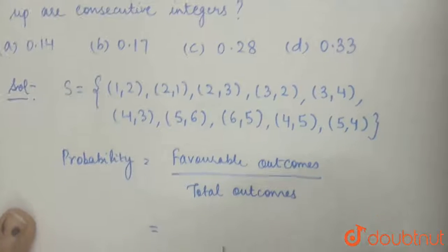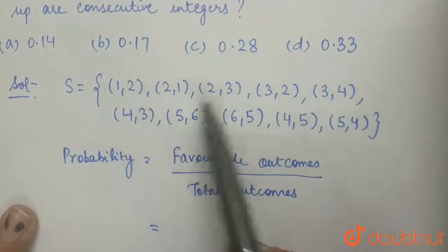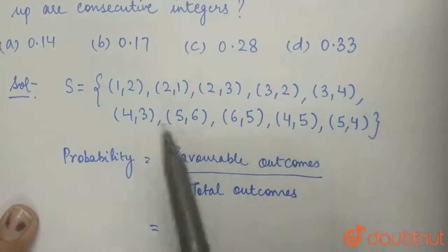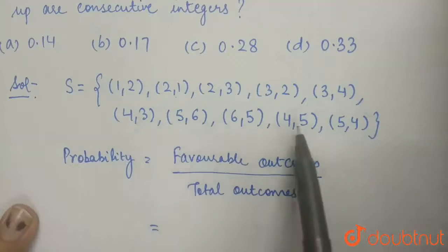So favorable outcomes are 1, 2, 3, 4, 5, 6, 7, 8, 9, and 10.